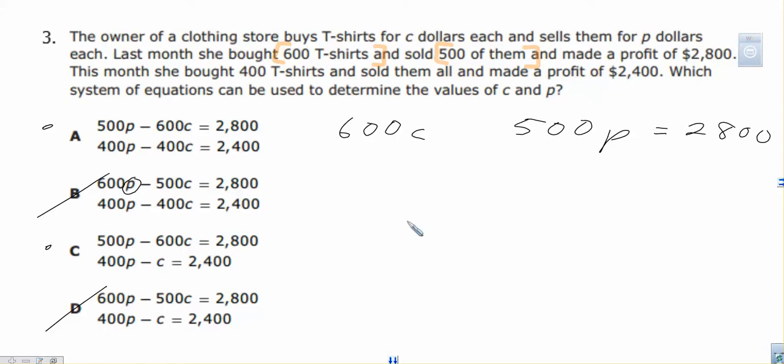Now the next thing we can notice is bought 400 shirts and sold them all. So we have 400P equals 2400. Which leaves us with answer choice A because C doesn't have anything right there. They bought 400 and they sold 400. And I think that's going to be it.